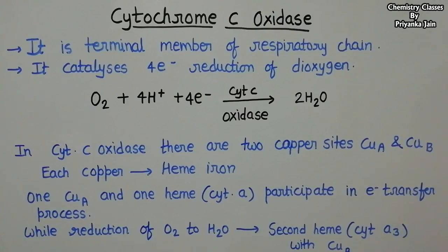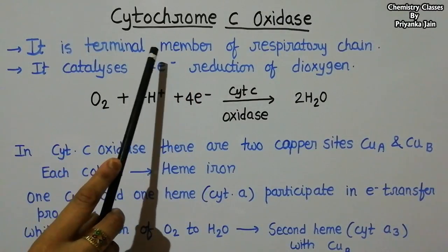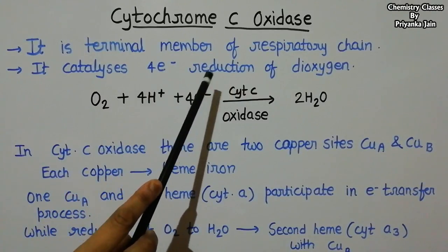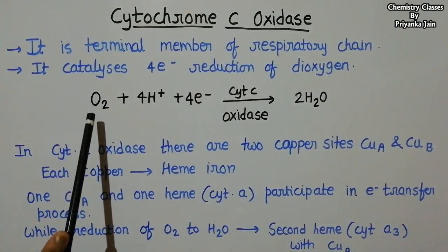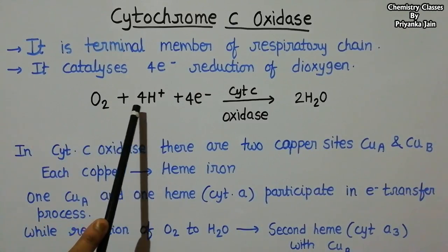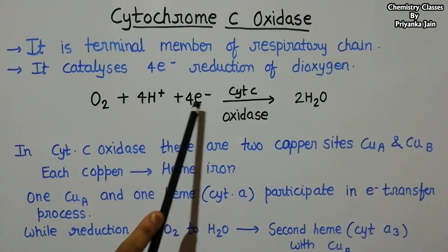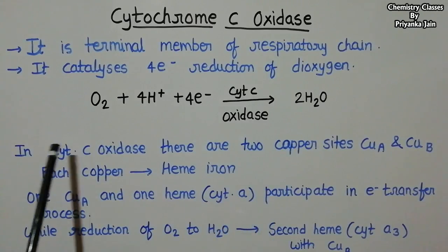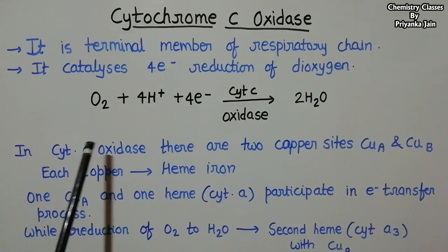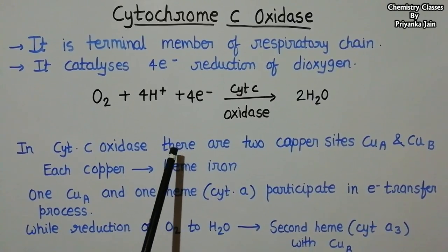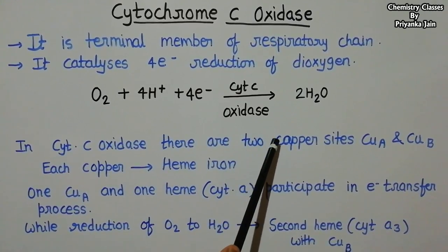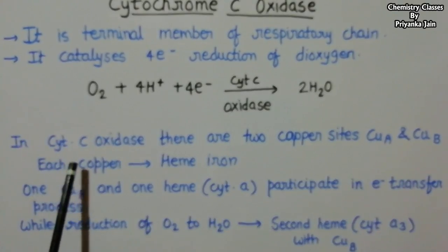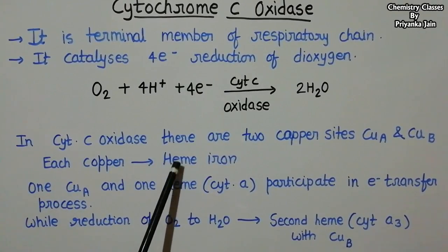Another important enzyme is cytochrome c oxidase, the terminal member of the respiratory chain. It catalyzes the four-electron reduction of dioxygen: O₂ + 4H⁺ + 4e⁻ → 2H₂O. In the structure of cytochrome c oxidase there are two active copper sites — CuA and CuB — and each copper is associated with a heme iron.